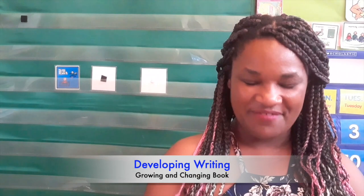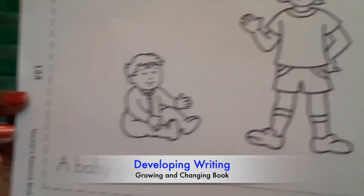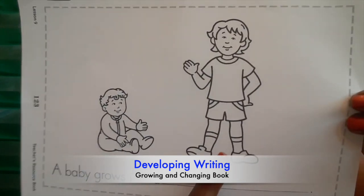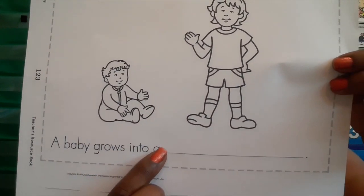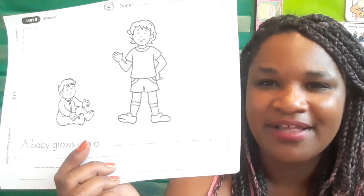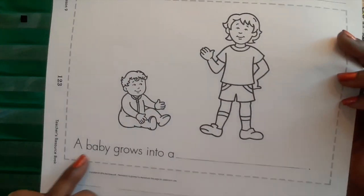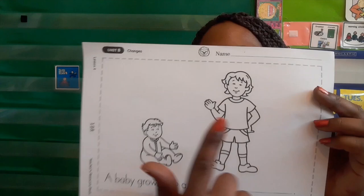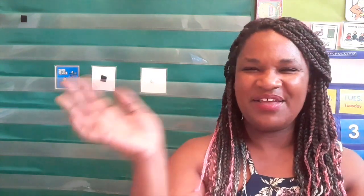Alright guys, it is blue time. For blue time you will be taking another page out of your packet to complete the next page of your 'Growing Like Me' book. We are on the page that has a picture of a baby and a boy. You're going to read the sentence 'a baby grows into a ___' and choose what word to put in the space — a big girl, a big boy, or a child. Then read the sentence once more, color the baby and the child, and save your picture until we meet again. Thank you, I had so much fun with you today. I hope I see you again next time. Bye-bye now.